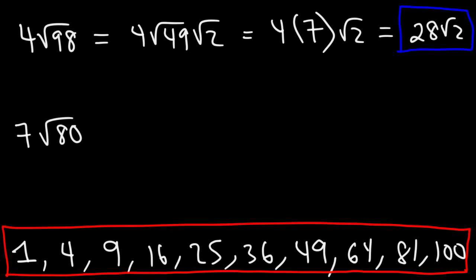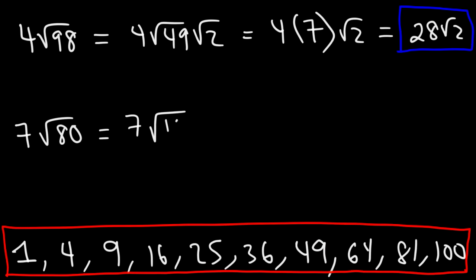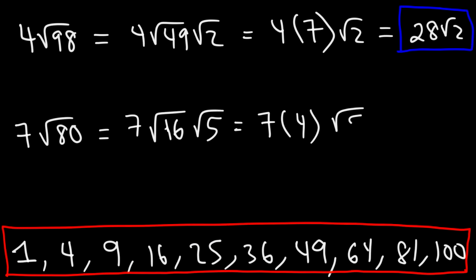For 7√80: what perfect square goes into 80? 80 is divisible by 16. 80 divided by 16 is 5, so we write 80 as 16 times 5. The square root of 16 is 4, and 7 times 4 is 28. So the answer is 28√5.